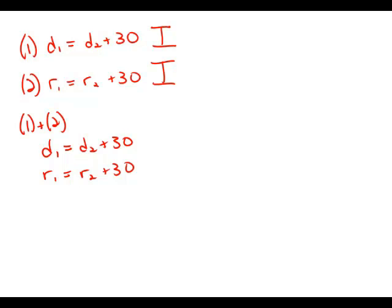First of all, I'm going to pick something huge for D2. D2 equals 1,000, and then D1 equals 30 greater than that, 1,030. Now I'm going to make R2 something really small, 1. And then R1 would be 30 greater than that, 31.